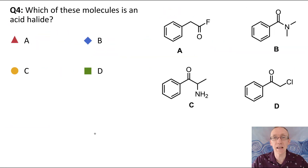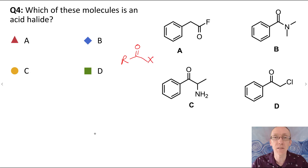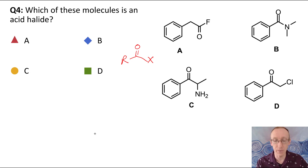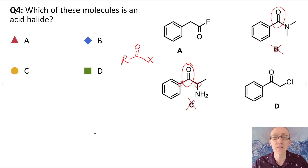Question four: which one of these is an acid halide? For a molecule to be an acid halide, we need to have an acyl group, and then a halogen directly attached to the carbon forming the acyl group. We can't have the halogen attached anywhere else for it to be an acid halide functional group. Looking at B and C: in B the acyl group is attached to a nitrogen — that's no good. In C, we've got the acyl group attached to two carbon-based R groups, so that's a ketone.